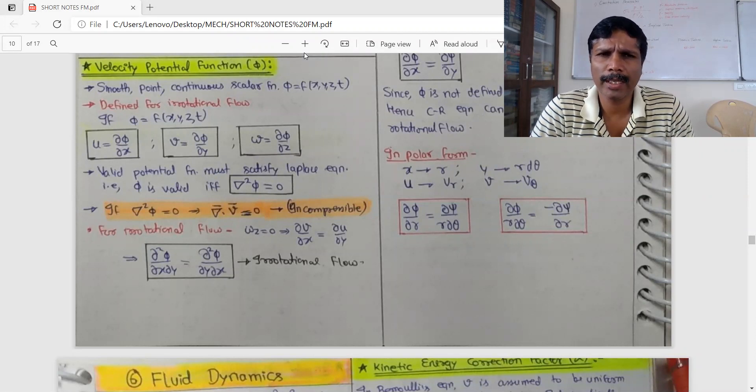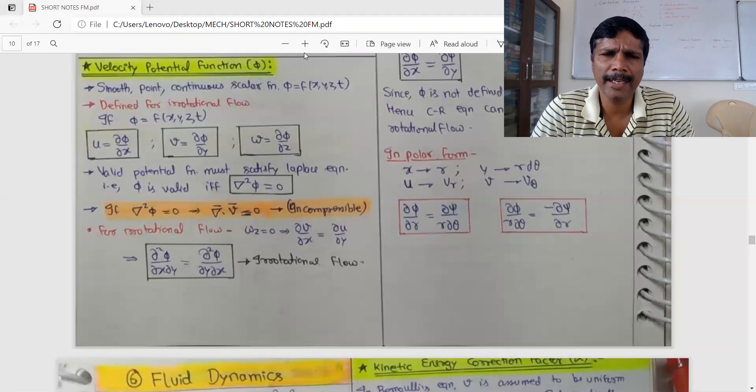This is defined for irrotational flow. u equal to minus d phi by dx, v equal to minus d phi by dy, w equal to minus d phi by dz.